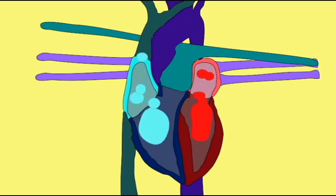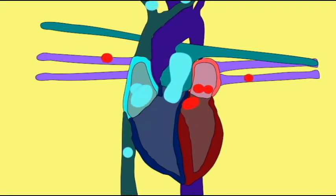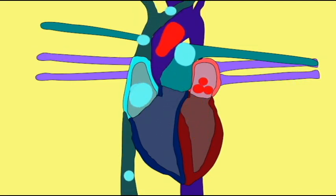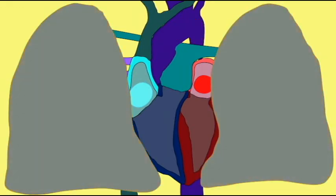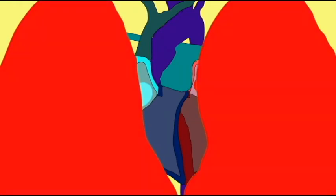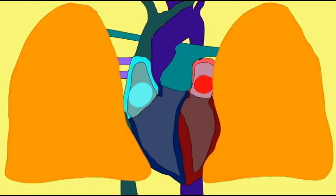The left atrium sends this oxygenated blood to the left ventricle, and the left ventricle, as it contracts, will then squeeze this blood through the aorta where it will go to the tissues of the body, the brain, the muscle, the skin, the liver, etc.